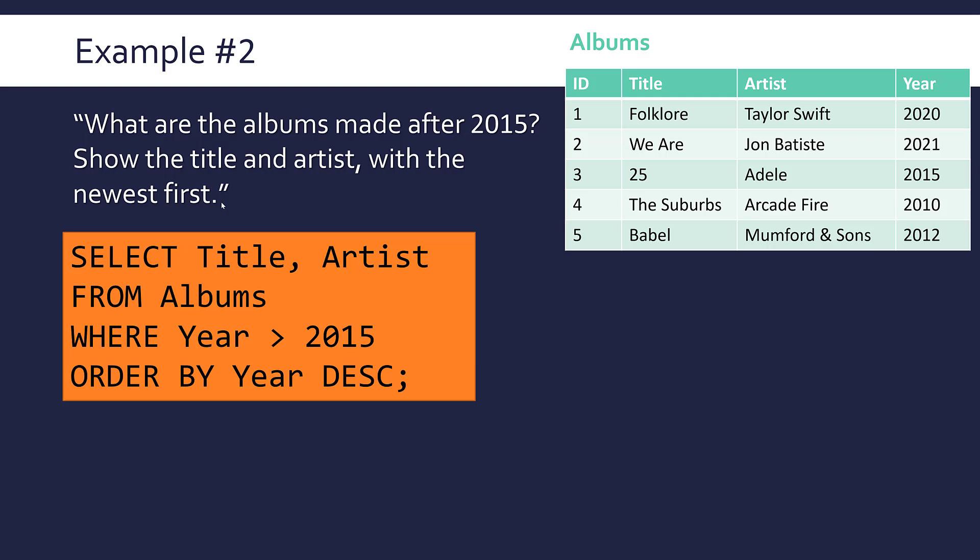This is what it would look like. We've got select title comma artist. If you've got more than one either field or table, you separate them with commas. Don't write and or anything like that, just have commas: title comma artist, the two fields I need. I've still only got one table, so from albums is as it is. But now we've got a where clause. A bit like an if statement really, we write a condition after it. So where the year is above 2015 is what it specified. Made after suggests it's 2016 onwards. You notice how year is not one of the ones I selected. That's fine, because year is within the albums table. I can still access it despite me not actually selecting it.